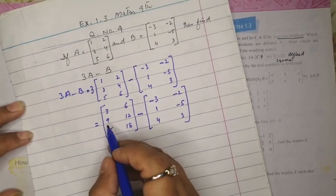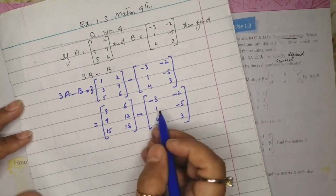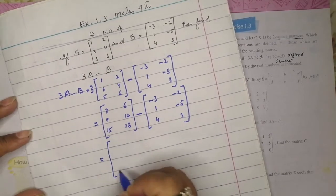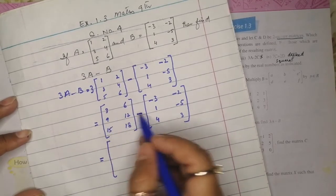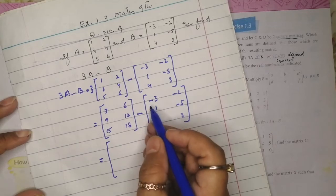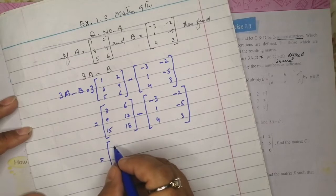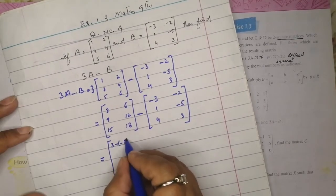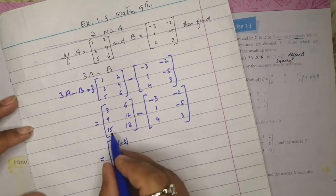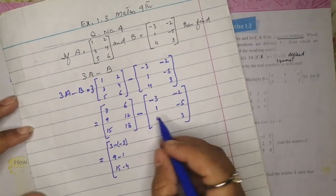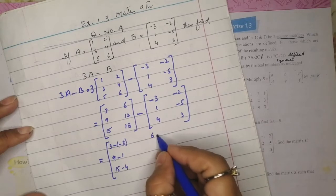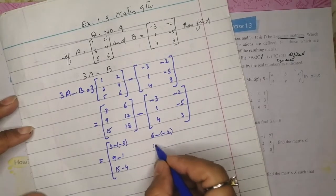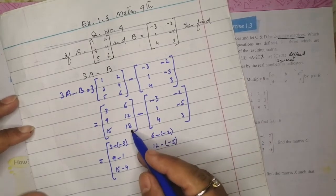Since there is a minus sign in the middle, we subtract each corresponding element of the second matrix from the first. So: 3 minus (-3) — since two minus signs appear together we put it in brackets — then 9 minus 1, then 15 minus 4, then 6 minus (-2) in brackets, then 12 minus (-5) in brackets, then 18 minus 3.